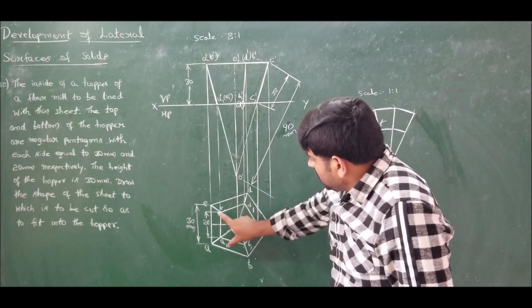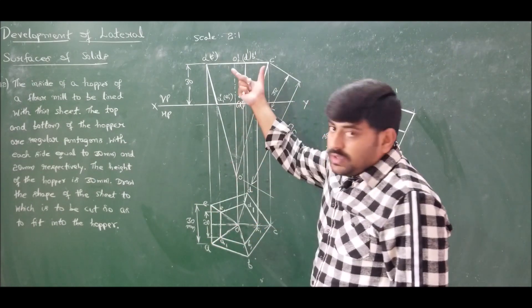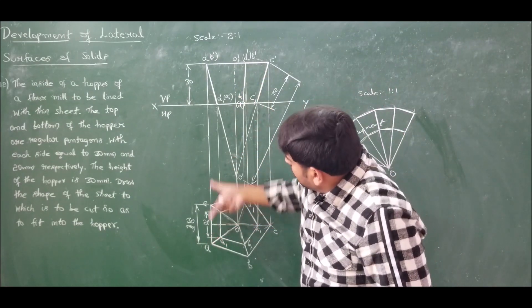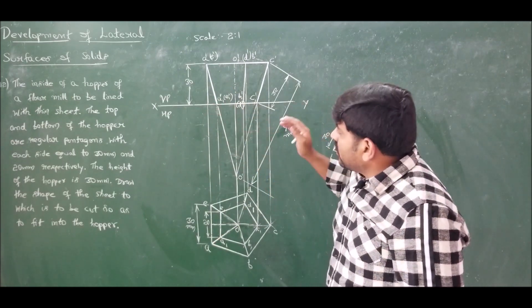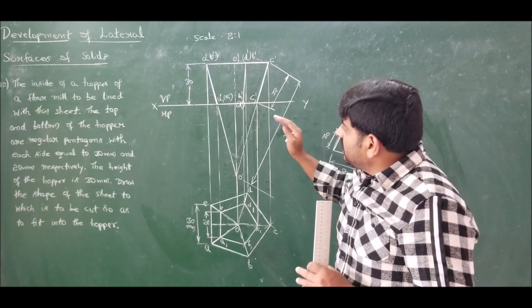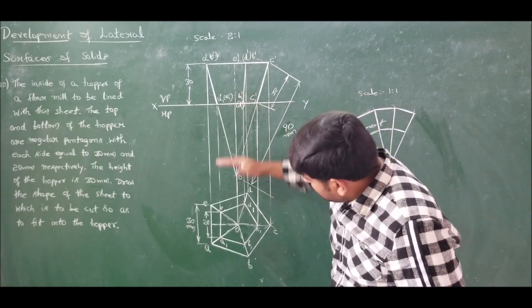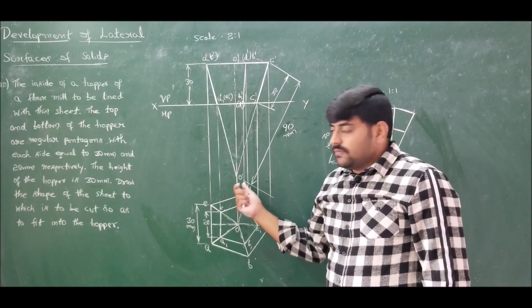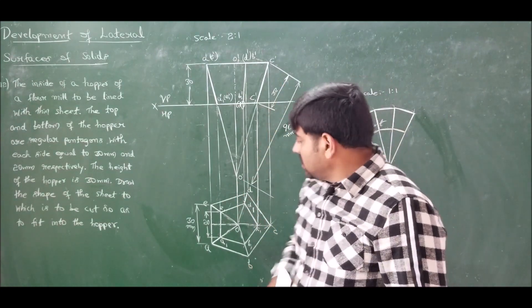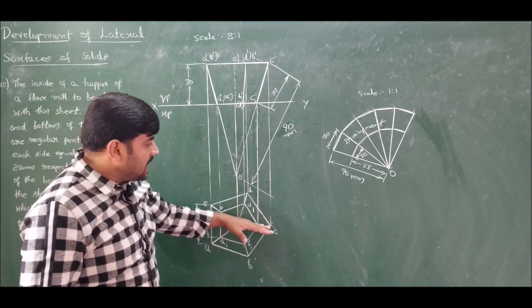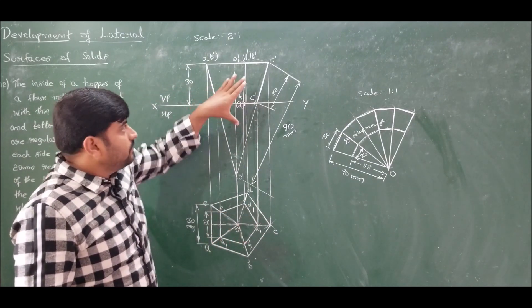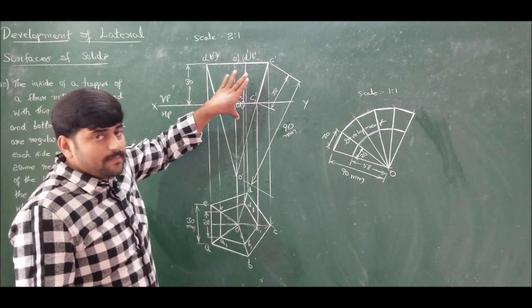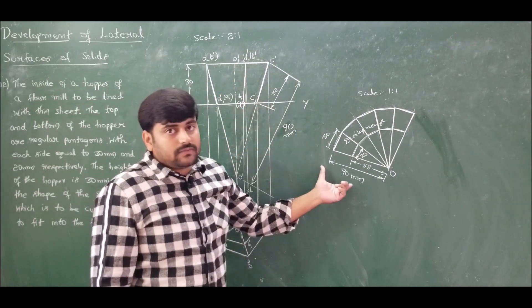This is how we solve this type of problem. In problem 11 we took one side parallel to VP; here for the hopper problem we took one side perpendicular to VP. Whenever we encounter an inverted frustum of a pyramid, leave sufficient space in the horizontal plane to get the apex — without that we cannot find the true slant edge. One slant edge must be parallel to VP, otherwise rotate it in the top view to make it parallel before extracting the true length.